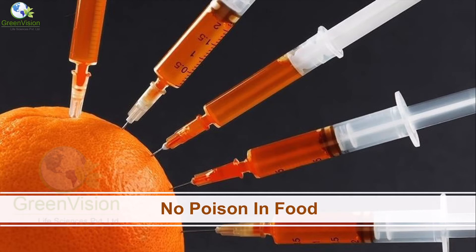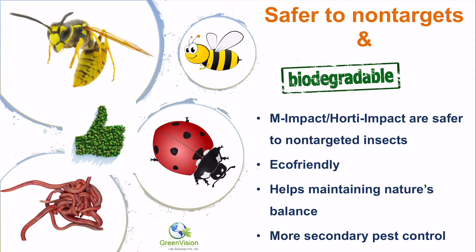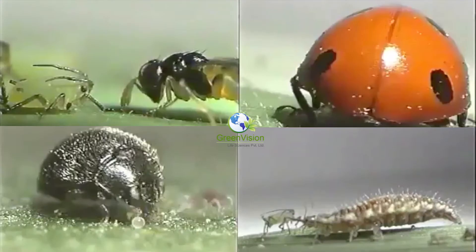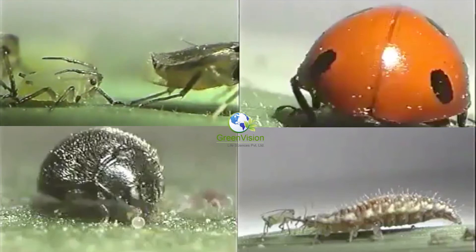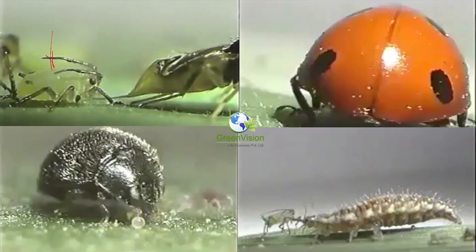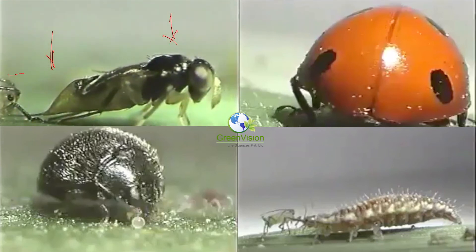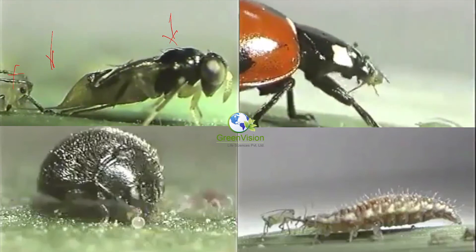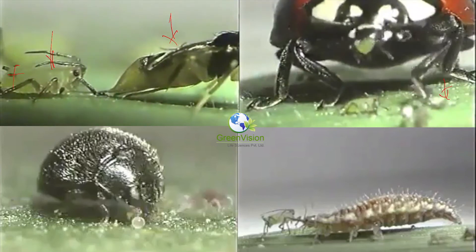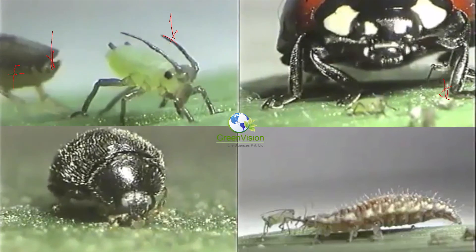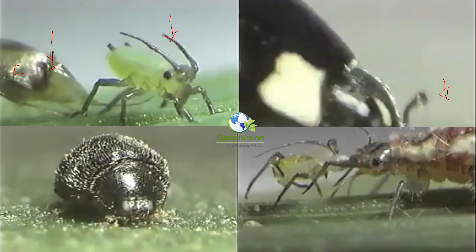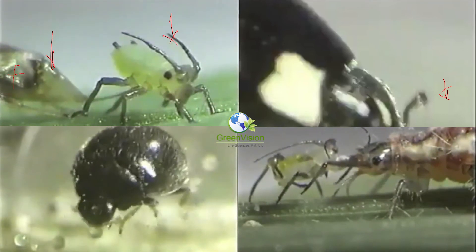MM-Pact is safer for non-target organisms and is biodegradable. Beneficial insects like honeybees, ladybird beetles, and earthworms are totally safe from MM-Pact. For example, the parasitic wasp that lays eggs inside aphid bodies is safe from MM-Pact, but aphids are killed. Similarly, the ladybird beetle eating aphids is safe, but the aphid is killed. Predatory beetles are safe while spider mites are killed. MM-Pact is more effective because it is safer for non-targets and harmful only for targeted insects.